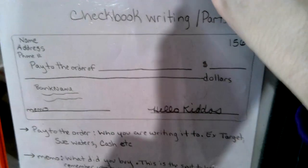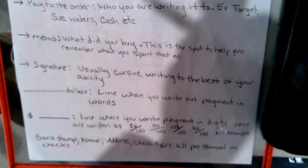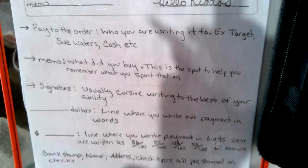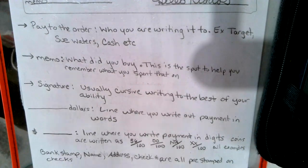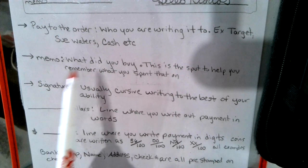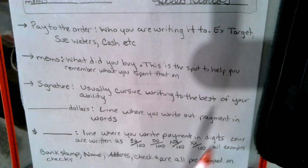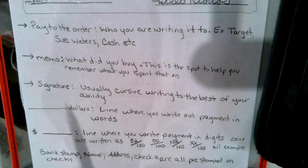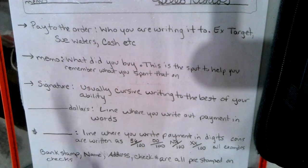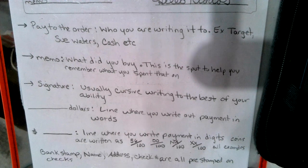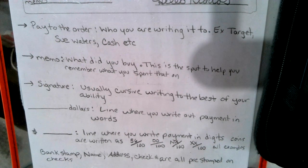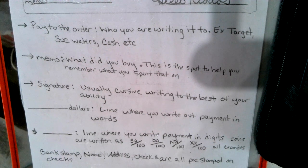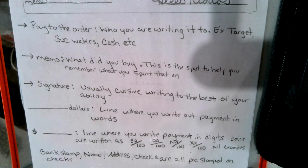We'll go to the parts underneath it and then go back and fill one out. We are taking notes today, so write all this stuff down. The pay to the order spot is who you are writing it to — example: Target, Sue Waters, cash, etc. The memo spot at the bottom right there is what did you buy — this is a spot to help you remember. The signature is usually cursive writing to the best of your ability. The blank with the word 'dollars' is the line where you write out the payment in words.